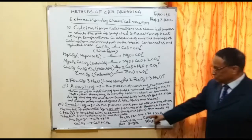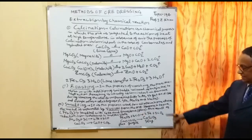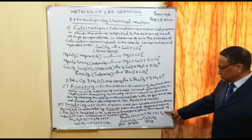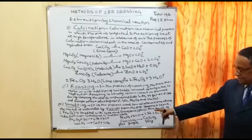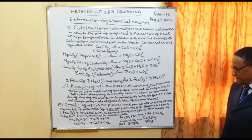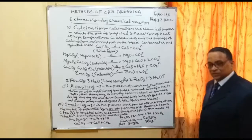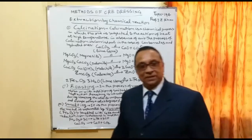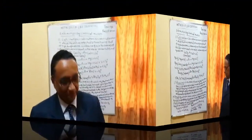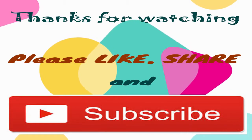Here CO is the flux, SiO2 is the gangue, and this gives CaSiO3, which is your slag. With this, I will stop here. Thank you very much.